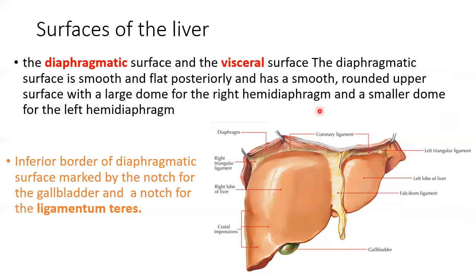The liver has two surfaces: diaphragmatic and visceral. The diaphragmatic surface is smooth and flat posteriorly, with a smooth rounded upper surface. It has a large dome for the right hemidiaphragm and a smaller dome for the left. The inferior border of the diaphragmatic surface is marked by a notch for the gallbladder and a notch for the ligamentum teres.